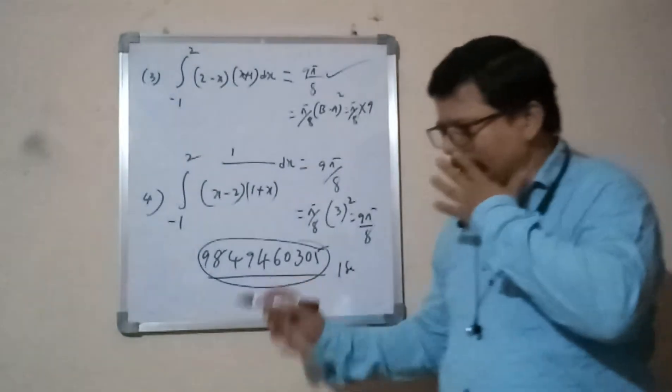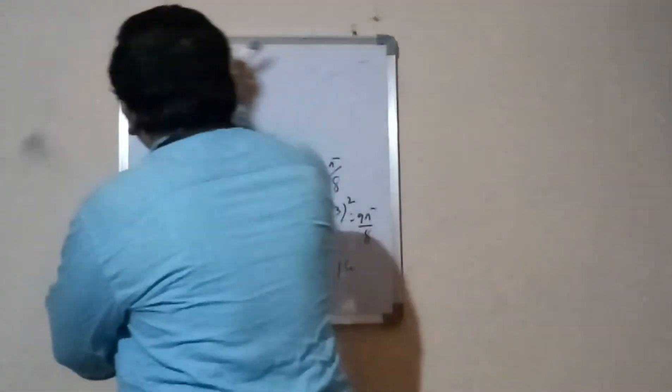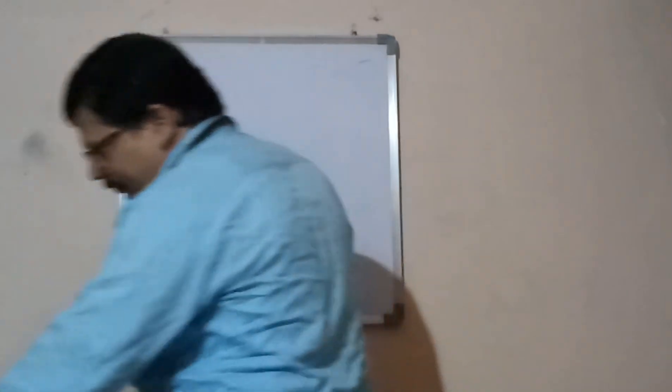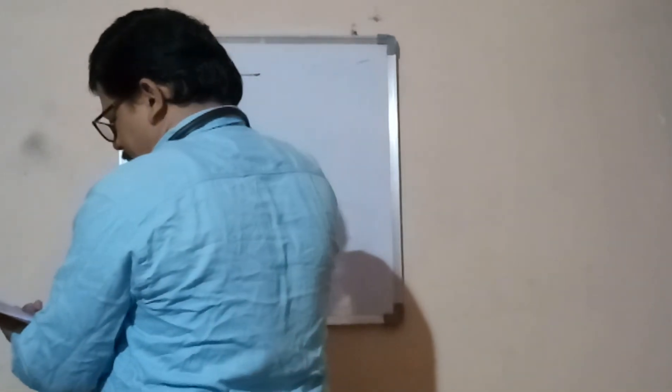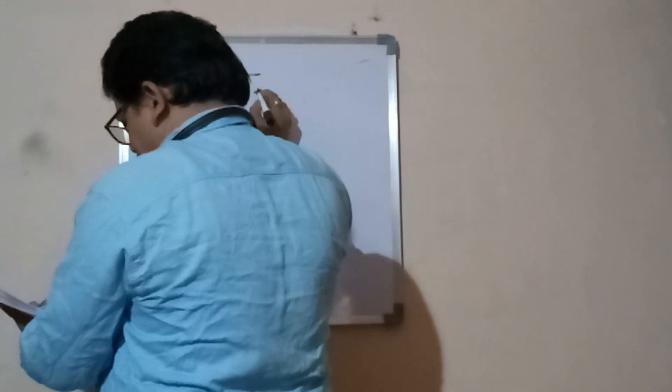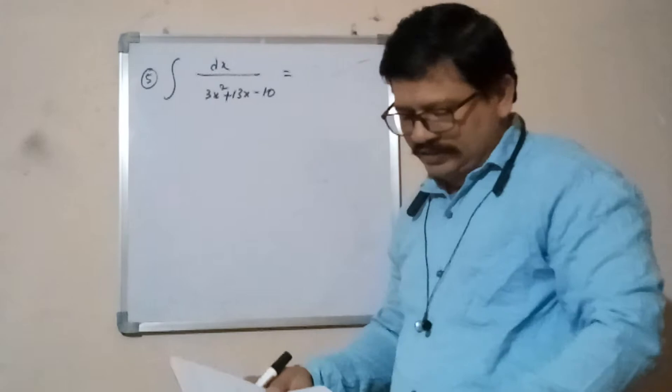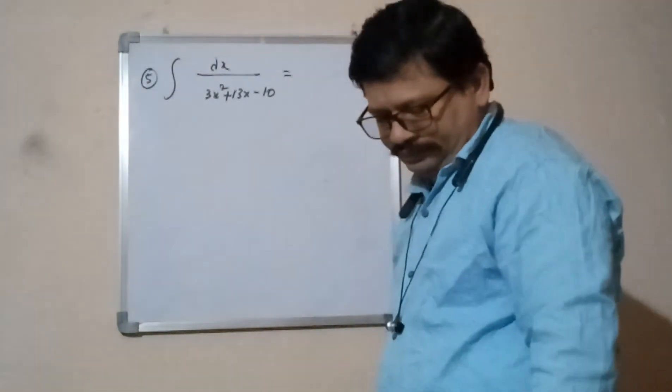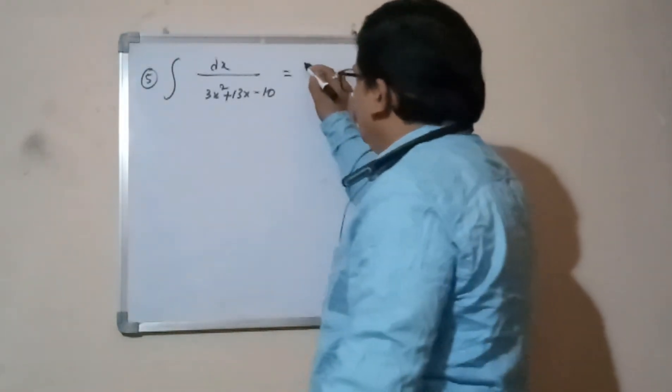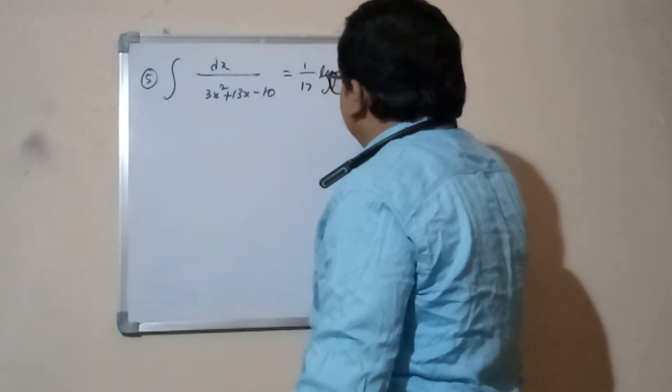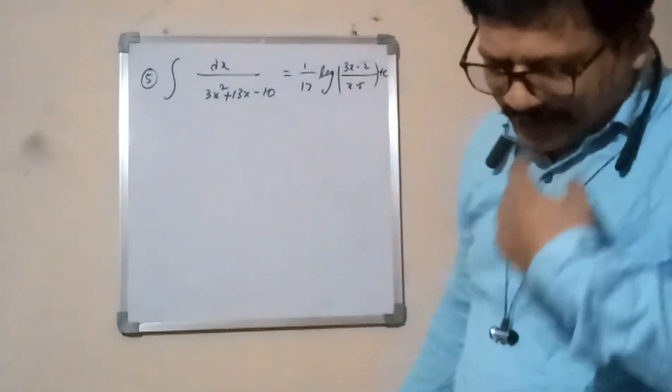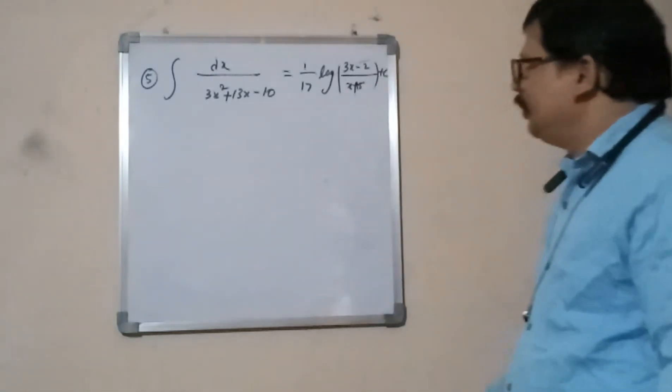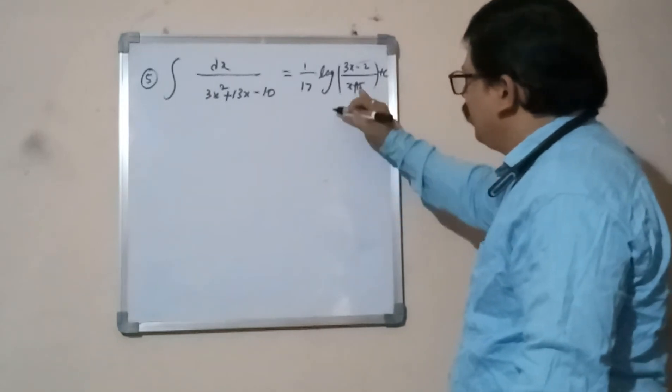Now next model. Fifth question, very easy, this another model. Fifth one: integral dx by (3x² + 13x - 10). This how do that I will tell. Generally 1 by 17, more or less c finish. This question 1 by 17 log (3x-2)/(x+5) plus c.